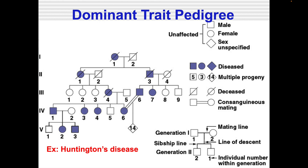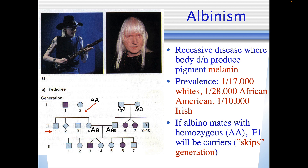Being able to look at these pedigrees and know what they mean is important. There's a key for what things mean in your data booklet. Albinism is an example of a recessive disease where the body doesn't produce the pigment melanin. When an albino mates with homozygous normal, the F1 will be carriers in a skipped generation.